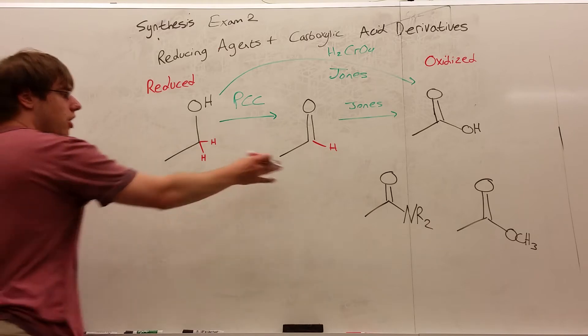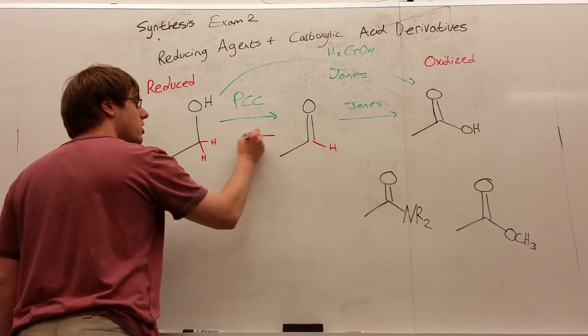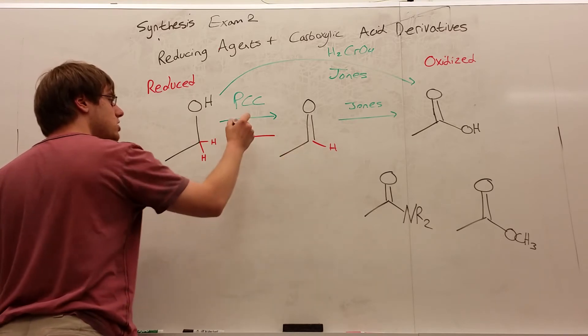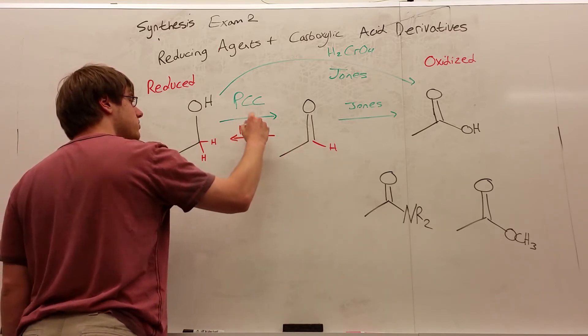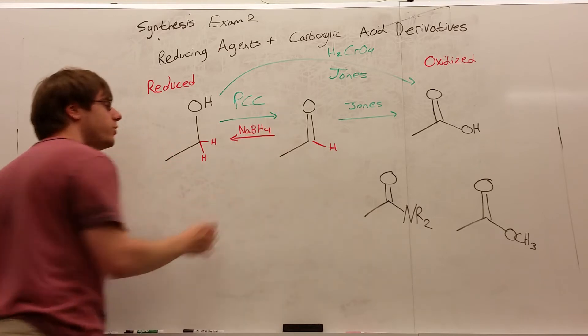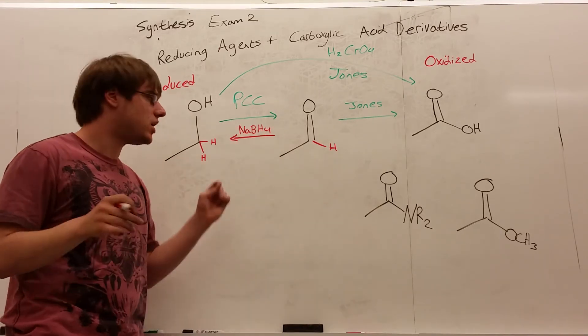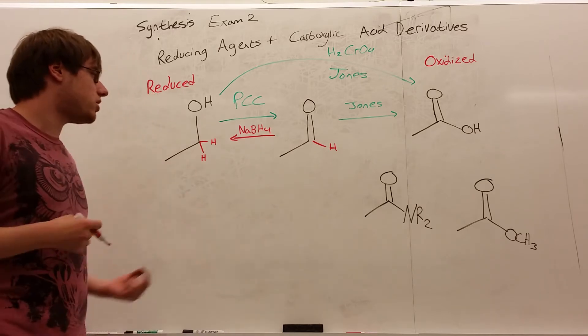And how do we turn a carbonyl into an OH? If you saw one of the previous synthesis videos, we saw that the way you turn carbonyl into OH is with the use of NaBH4. NaBH4 is a weak reducing agent that basically does the opposite of what PCC does. It turns the carbonyl back into an OH.